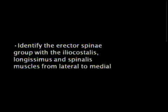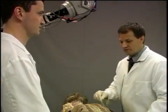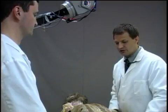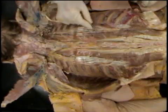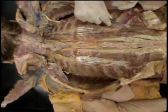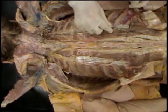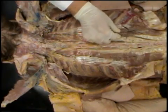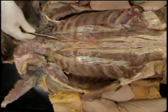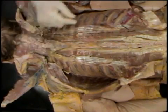In this step, we'll look at the identification of the more superficial true back muscles, the erector spinae group, which has three subgroups: the iliocostalis, the longissimus, and the spinalis. Now that we've removed the superficial and intermediate back muscles, we can look at the erector spinae. Lateral to the spinous processes you can see the erector spinae muscles, innervated by dorsal rami. The most lateral is the iliocostalis, the intermediate group is the longissimus, and the most medial is the spinalis.